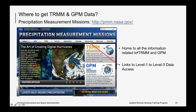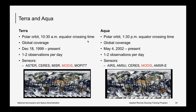TRMM and GPM data can be obtained from the Precipitation Measurement Mission site, which is the home of all information about TRMM and GPM. There is a link to data access for all sensor data — level 1, level 2, and level 3 composite or gridded data from TRMM and GPM, including TMPA and IMERG, available through this link.